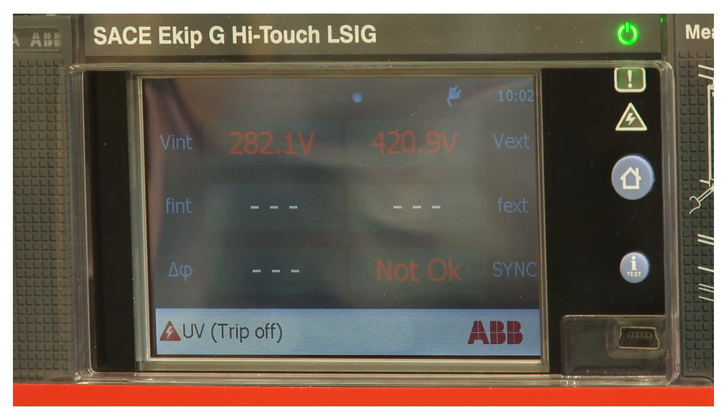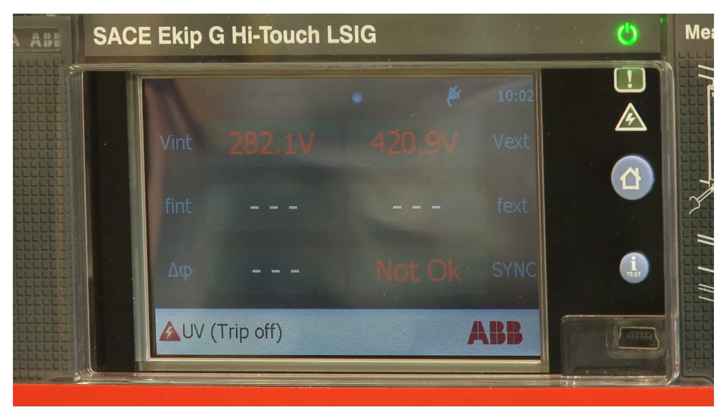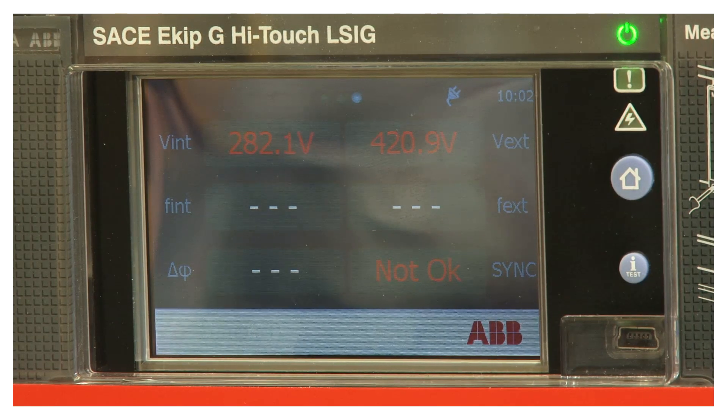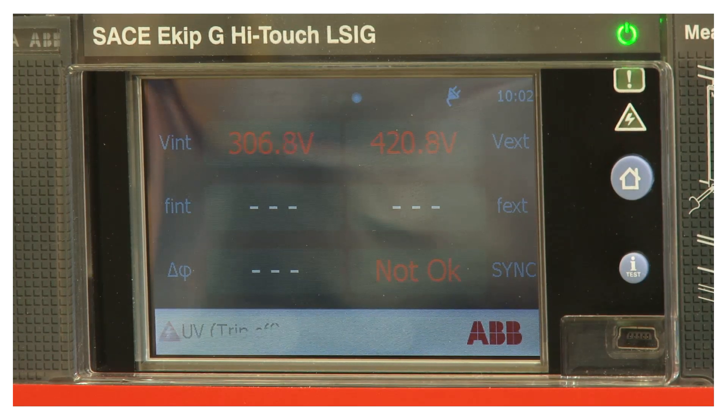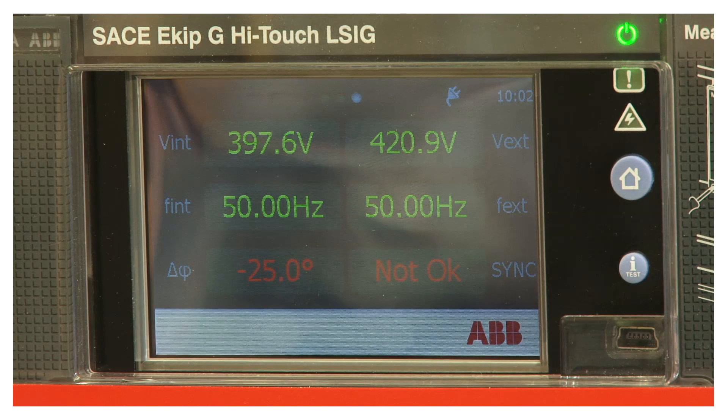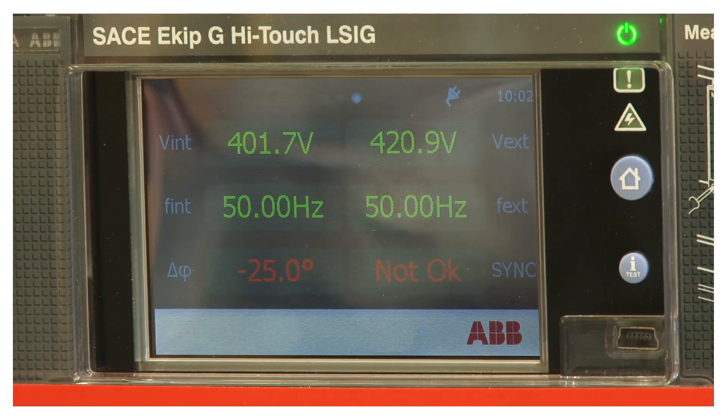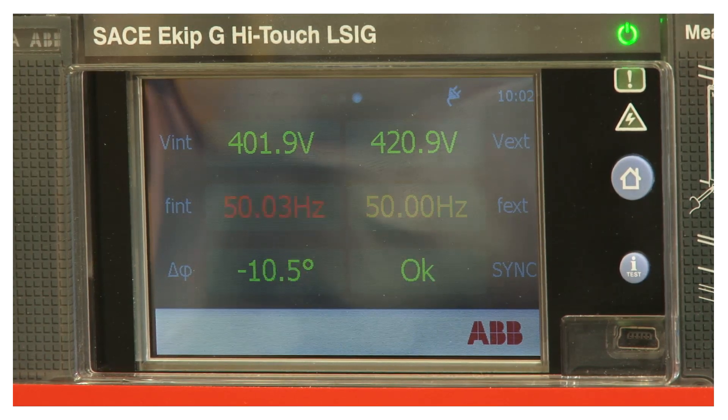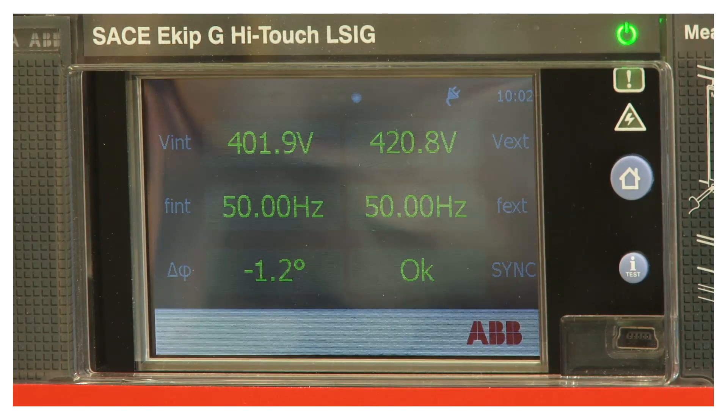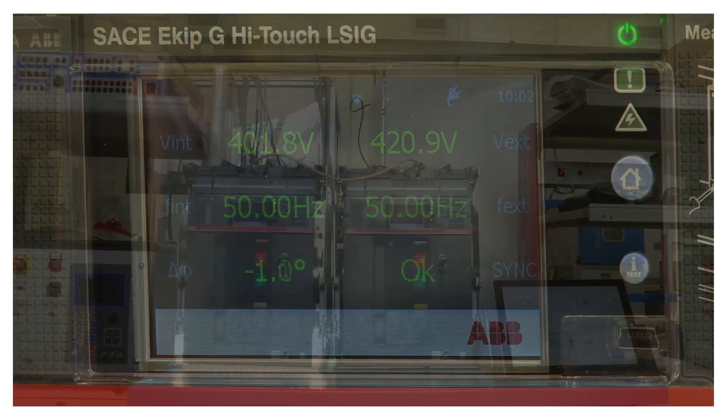Now, for example, you can see here the voltages are not ok and as soon as the voltages get the correct threshold, you can see the green light and so on the frequencies. As soon as all three parameters has, for example, frequencies, voltages and degrees between the two lines, you have the ok to make the synchronization.